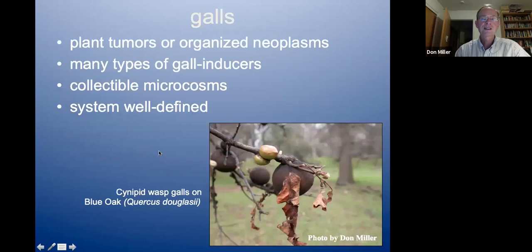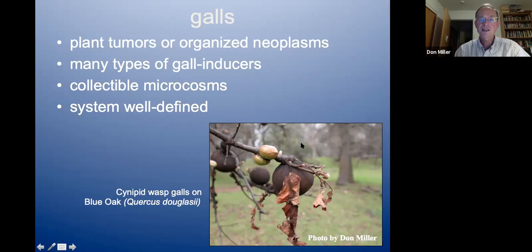This system involves galls, which are quite interesting in natural history. In California, kids pick up oak galls and throw them. Galls are organized tumors that occur especially on plants. Here's a common California example sometimes called 'oak apples,' caused by a tiny wasp larva many times smaller than the gall itself. The animal tricks the plant, altering its developmental program through hormones or hormone analogs to produce a neoplasm or gall that benefits the insect but not the host plant.